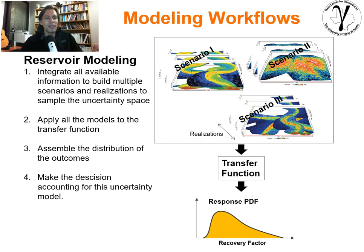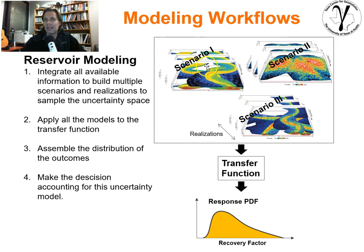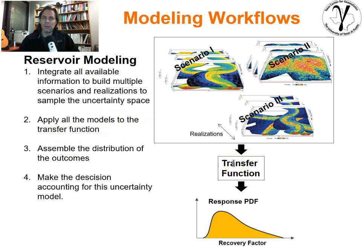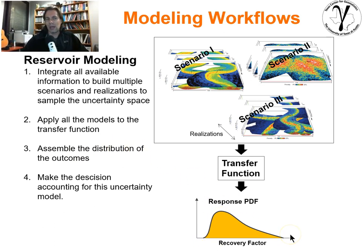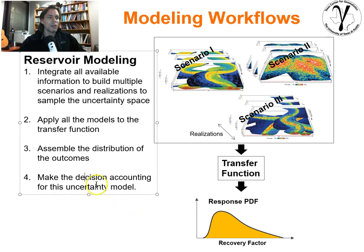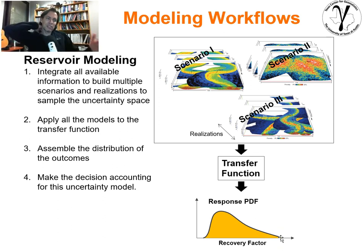To summarize the overall reservoir modeling workflow: we integrate all available information to build multiple scenarios and realizations to sample an uncertainty space. We have multiple distinct scenarios with different modeling choices, and within each scenario we have different realizations that account for spatial uncertainty. We apply all models to the transfer function — volumetric calculations, flow simulation, connectivity analysis — and assemble a distribution of the outcome or forecast, such as recovery factor. Then we make a decision based on this uncertainty distribution.